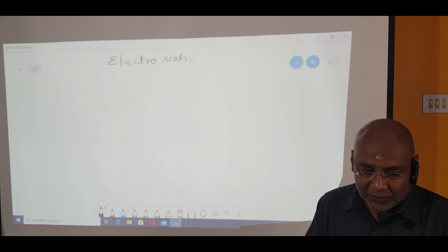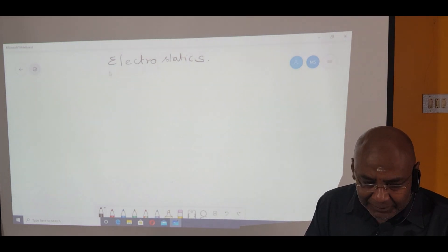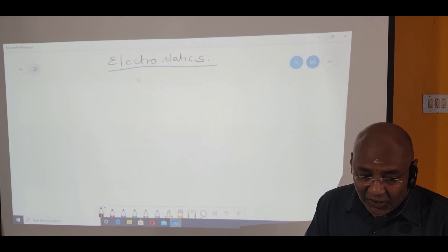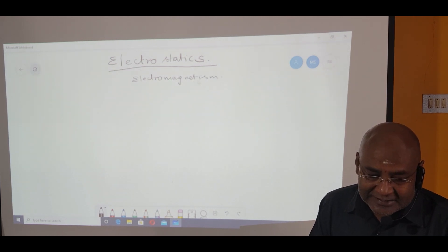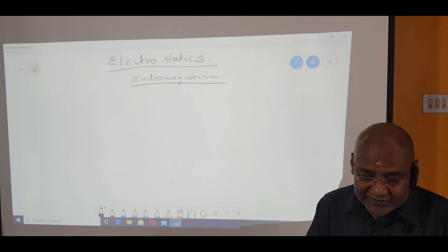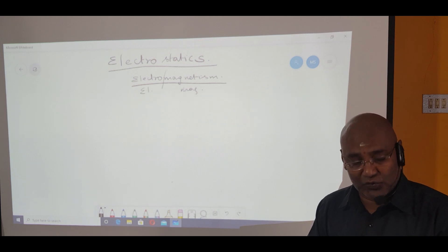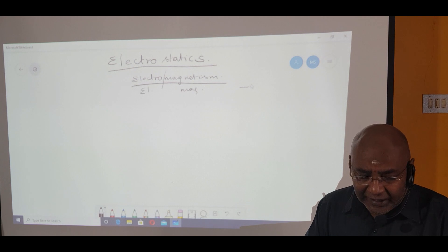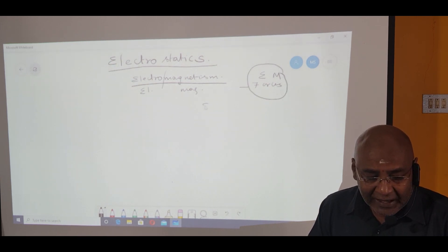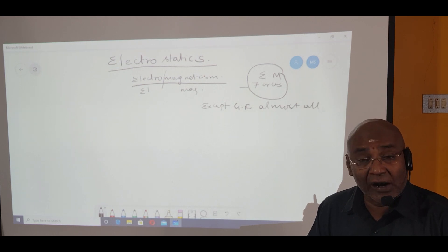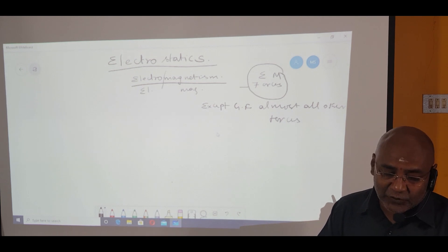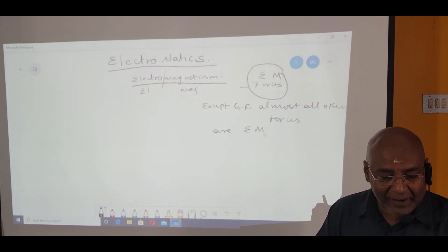When you are considering this topic called electrostatics, it comes under a branch of physics called electromagnetism. Electromagnetism is a very important branch of physics which deals with both electric and magnetic fields and electric and magnetic forces. Here, we are going to consider electromagnetic forces. Except for the gravitational force, almost all other forces are considered to be electromagnetic in nature.